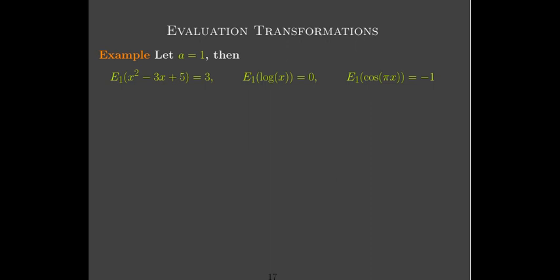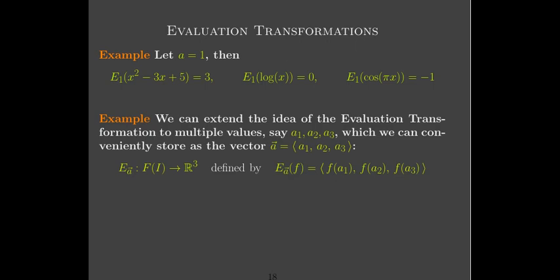For example, we choose a = 1, so the transformation is called e₁. For the input function x² − 3x + 5, we replace x with 1 to get the output value. e₁ of log(x) would be log(1), which is zero. And e₁ of cos(πx) would be cos(π), which is negative one.